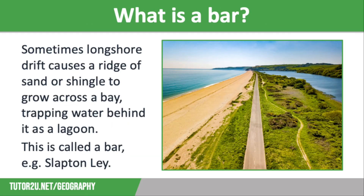So what is a bar and how does it form? Sometimes longshore drift causes a ridge of sand or shingle to grow across a bay, trapping water behind it as a lagoon. This is called a bar, which is also known as a barrier beach.